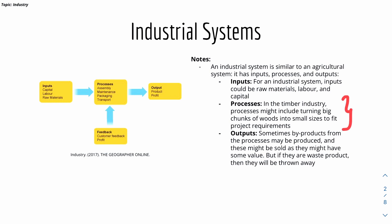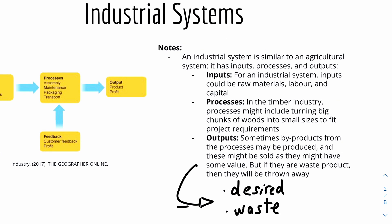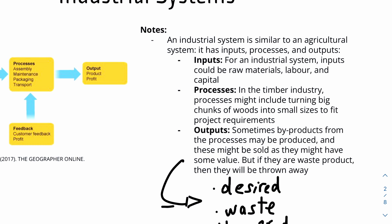The processes — for example, in the timber or wood industry — might include turning big chunks of wood into smaller sizes to fit project requirements or to meet demand. Outputs will include the desired product, a waste product that needs to be thrown away, and by-products that are almost like waste but can be sold to earn more money.